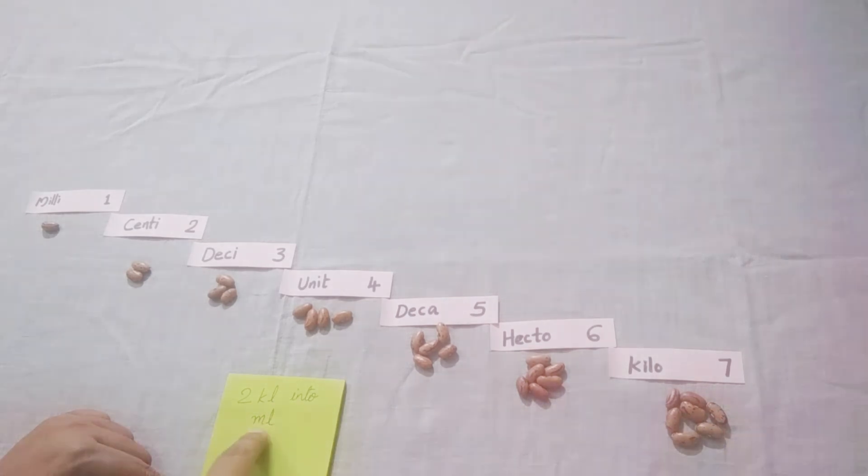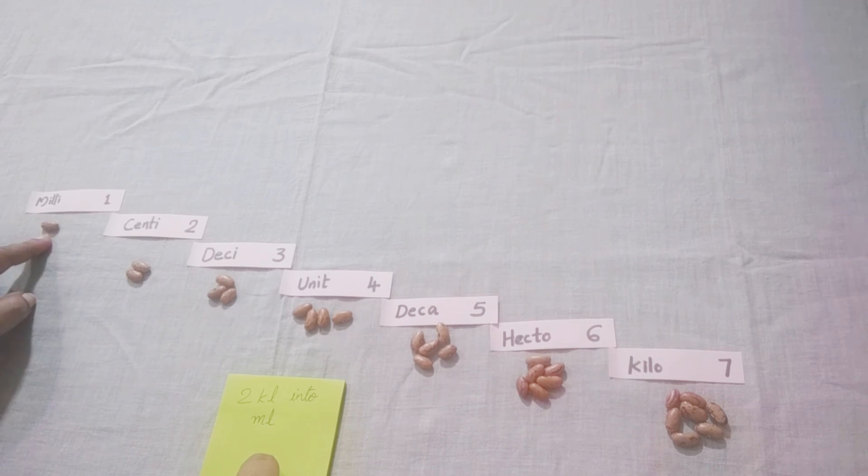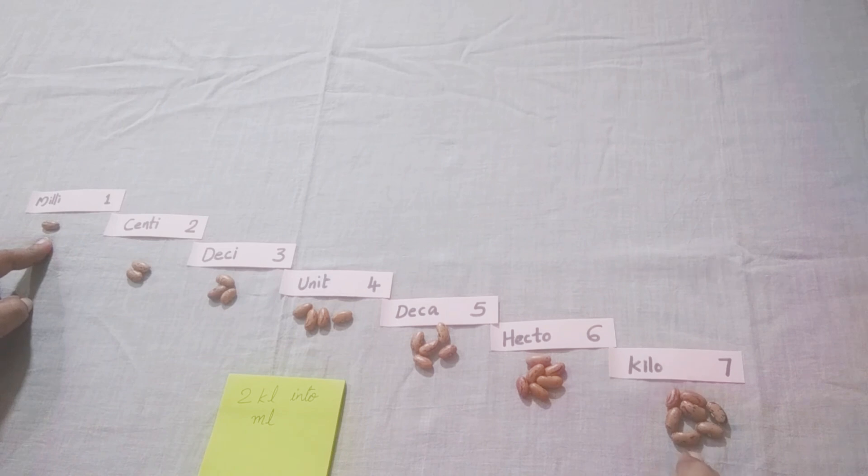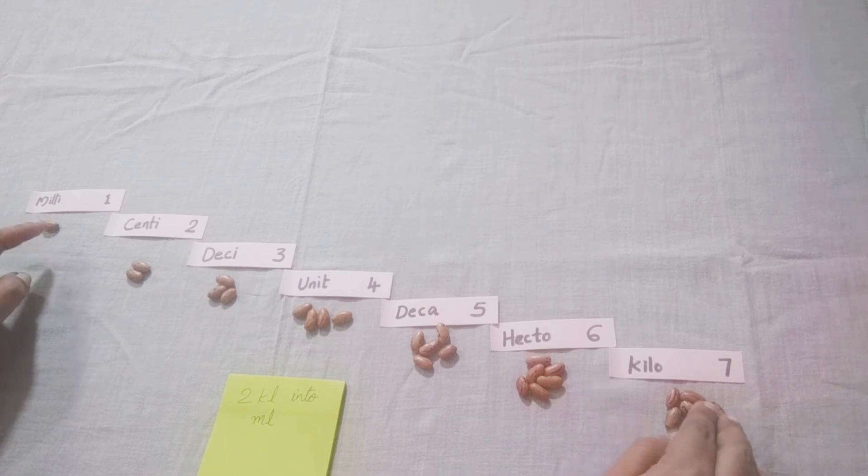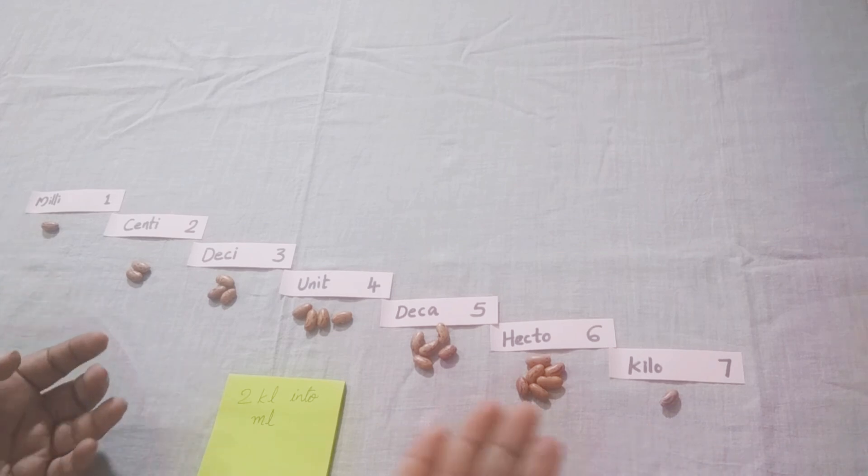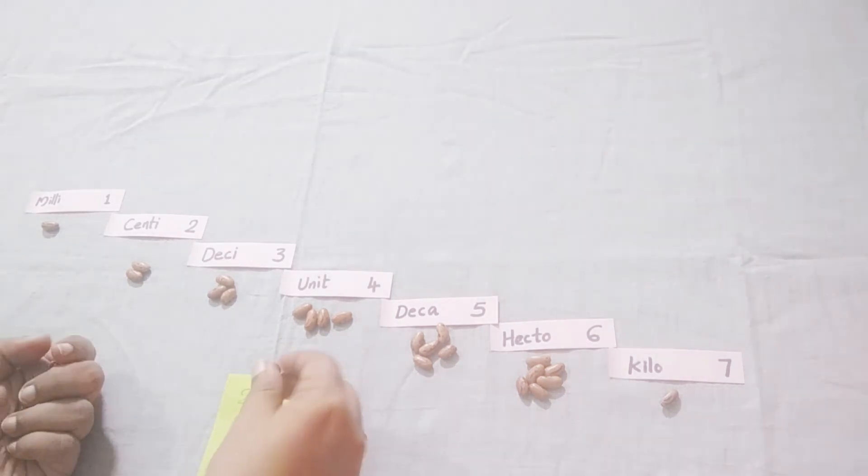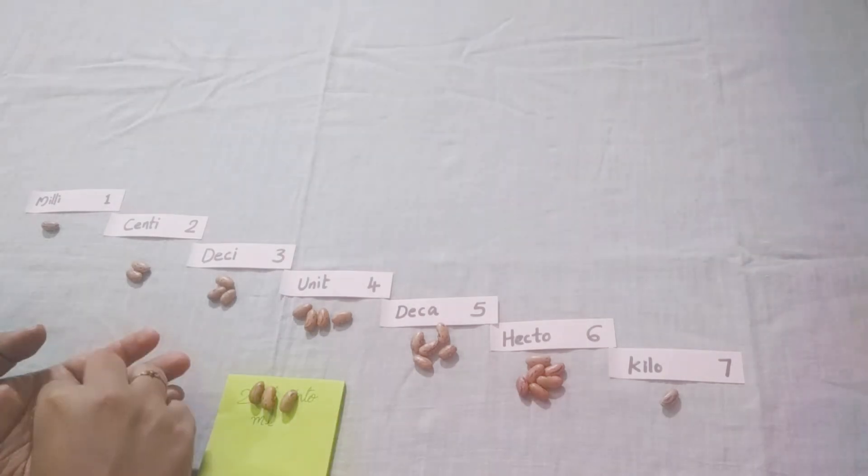Can you convert two kiloliters into milliliters? So see here, under milliliters we have only one bean, and here we have seven. So to make this one seven, how many more beans do we need here? We need six. So this six beans we need here. So this six beans you keep after two instead of zeros.